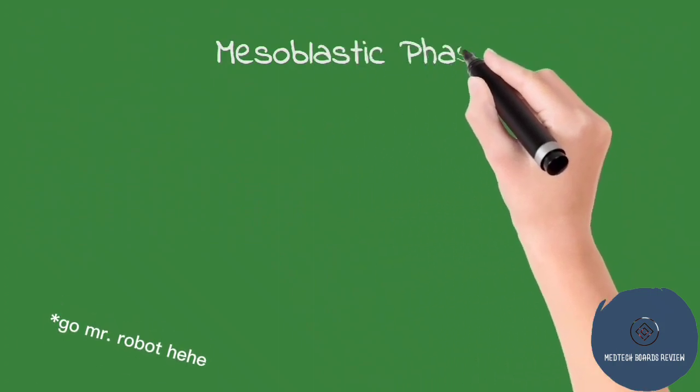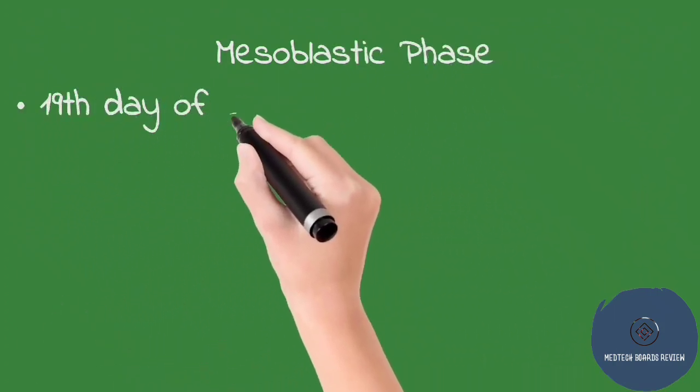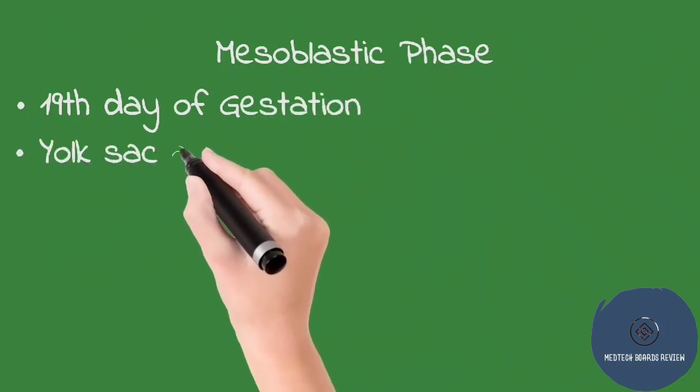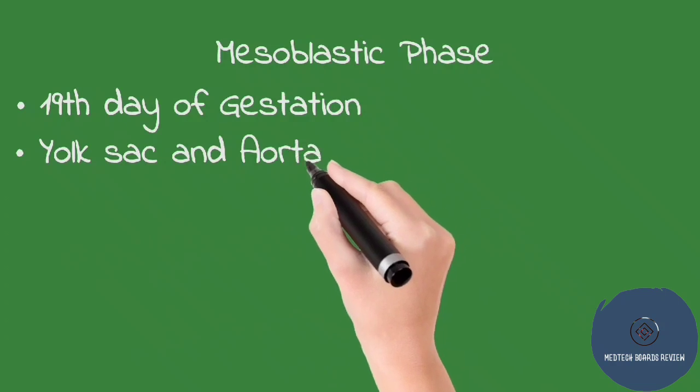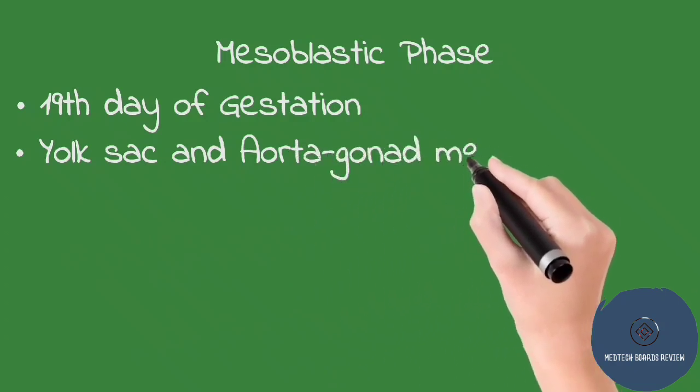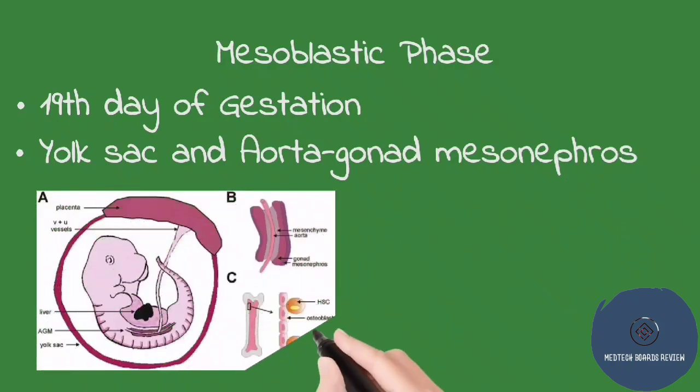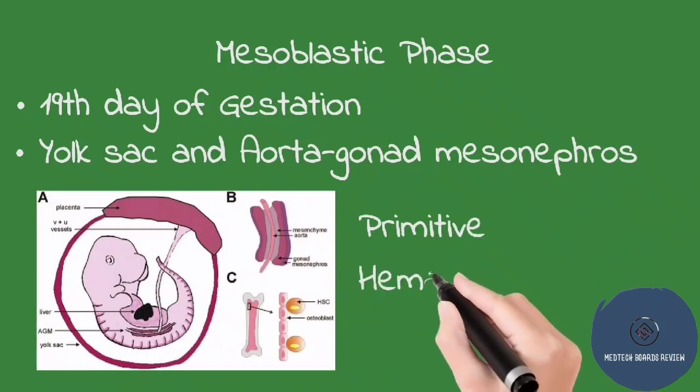First one is the mesoblastic phase. Mesoblastic phase starts at the 19th day of gestation or pregnancy. Hematopoiesis or blood formation occurs in the yolk sac and aorta-gonad-mesonephros of the fetus. The blood formation during this phase is called primitive hematopoiesis.